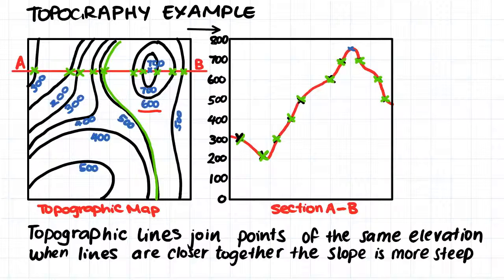It's important to note that when the lines are closer together, the slope is more steep. So for example, in this region here, where the lines are quite close together, we have quite a steep slope. Whereas in this region here, where the lines are much further apart, our slope is not as steep.